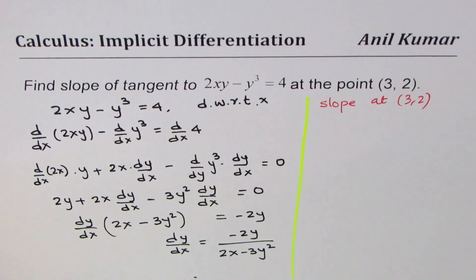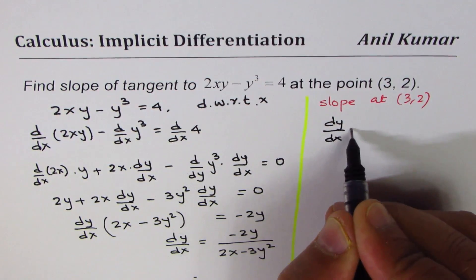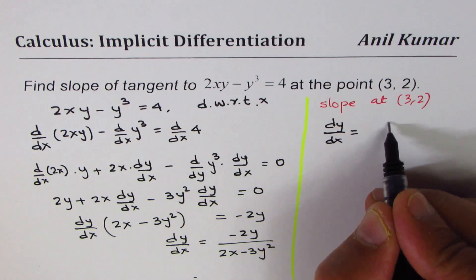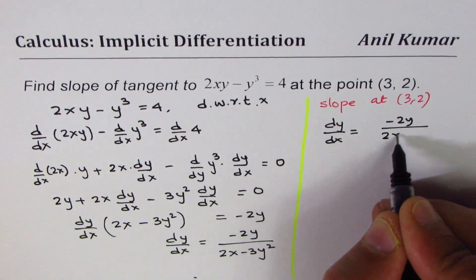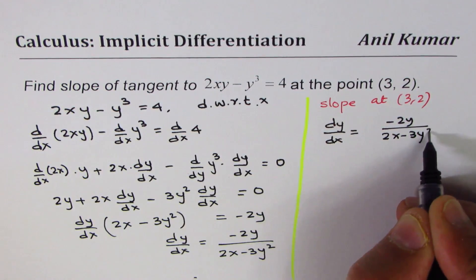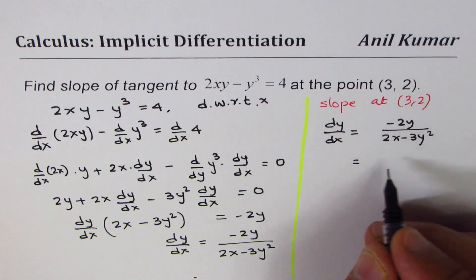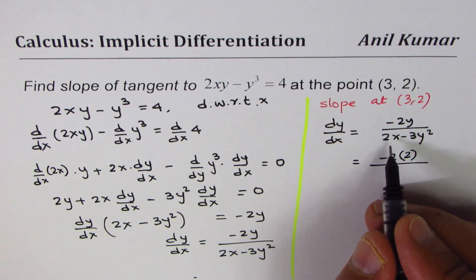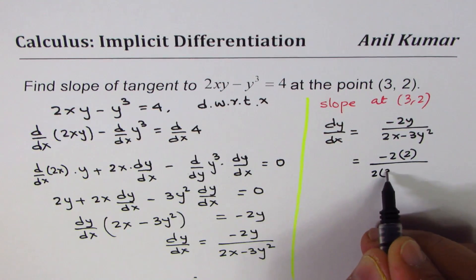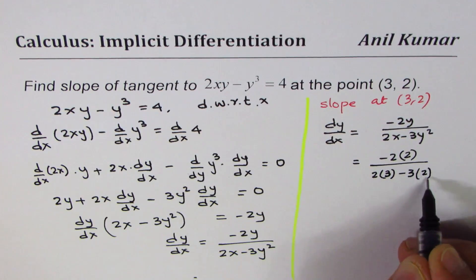So dy/dx equals—let me rewrite this—minus 2y over (2x - 3y²). We'll just substitute these values: 3 for x, 2 for y. So we have minus 2 times 2 divided by 2 times 3, which is the value of x, minus 3 times 2².